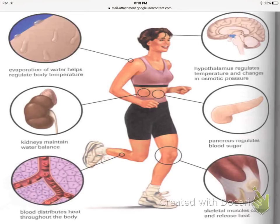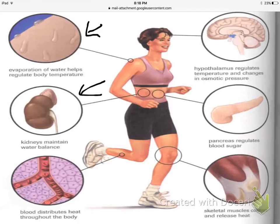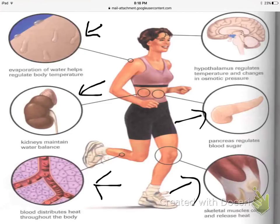This picture shows different ways your body maintains homeostasis. First, the skin: when we sweat, our body releases liquid to cool us down, and evaporation of that water from our skin helps regulate body temperature. The kidneys maintain water balance so there's not too much or too little water in the body. Blood distributes heat throughout the body to keep a constant temperature. Skeletal muscles contracting also release heat. The pancreas regulates blood sugar to prevent spikes or drops. And part of the brain regulates temperature and changes in pressure.